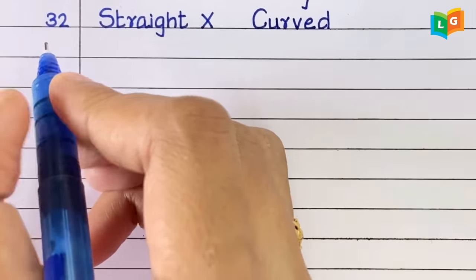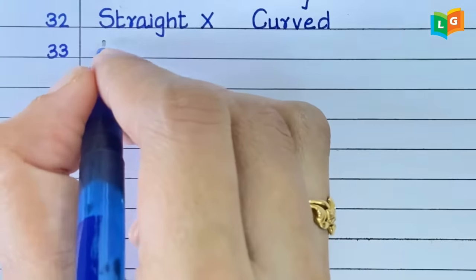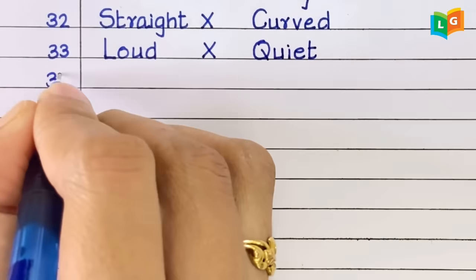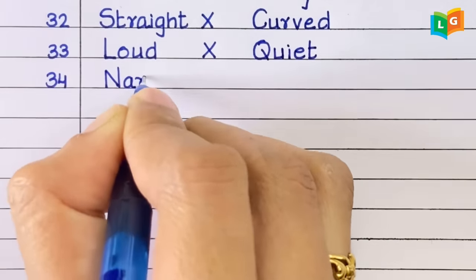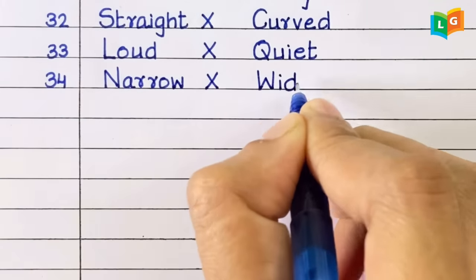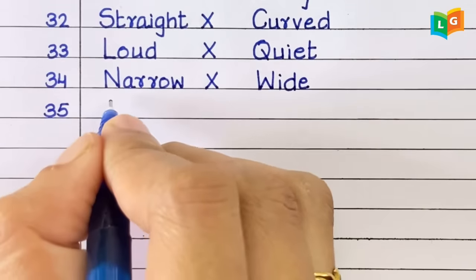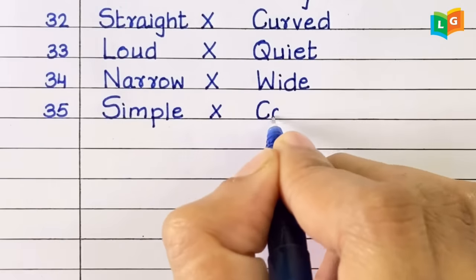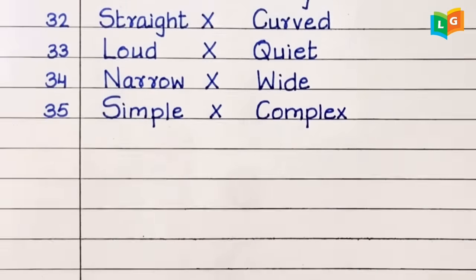Thirty-three, loud, quiet. Thirty-four, narrow, wide. Thirty-five, simple, complex.